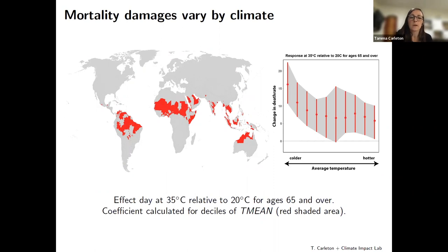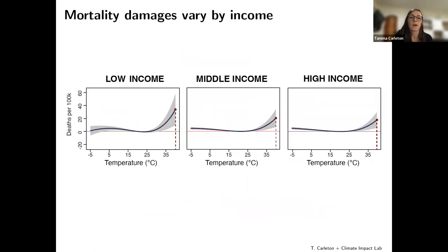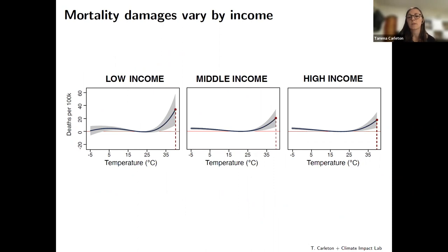We also allow economic resources to influence the shape of that curve — it's not just that people are adapted to their climate, but that income levels can facilitate adaptation by lowering sensitivity of mortality to heat. That's what we see in the data.